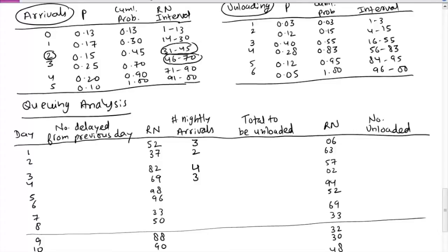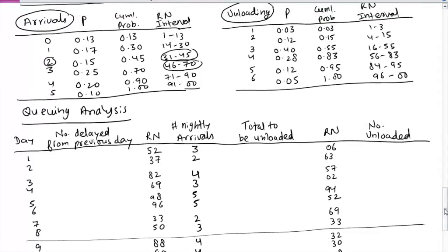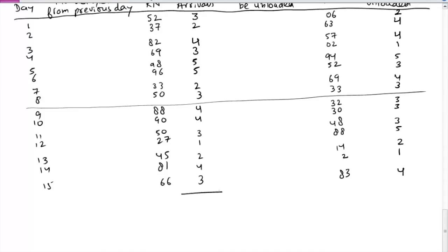Similarly, for unloading, the first number is 6, and 6 lies in this range, so 2 will be unloaded. For 63, which lies in this range, 4 will be unloaded. For 57, also 4 will be unloaded, and so on. Adding everything up, total arrivals come to 48 and total unloadings come to 47.